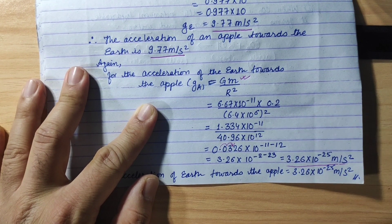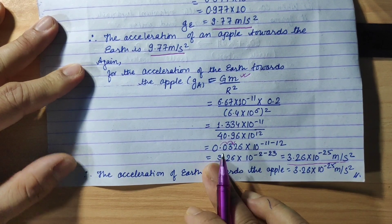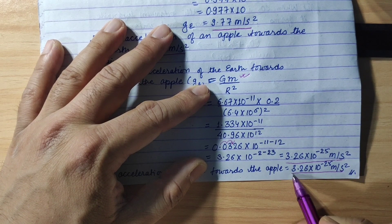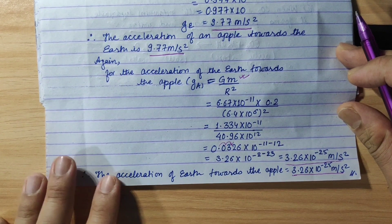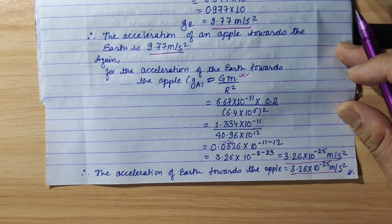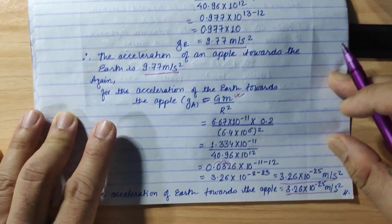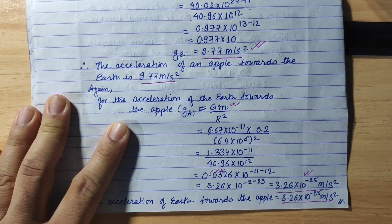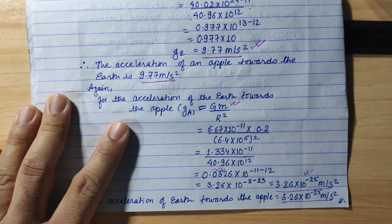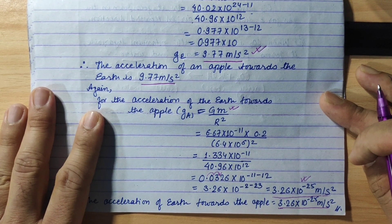So the acceleration of the Earth towards the apple is 3.26 × 10⁻²⁵ m/s². The apple's acceleration is negligible for the Earth. This is the mutual force — while the forces are equal, the acceleration produced in the Earth is only 3.26 × 10⁻²⁵ m/s², while the apple accelerates at 9.77 m/s². That's why practically we see the apple falling, not the Earth. Thank you.